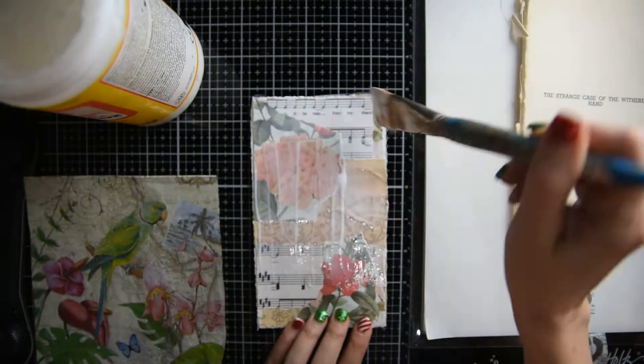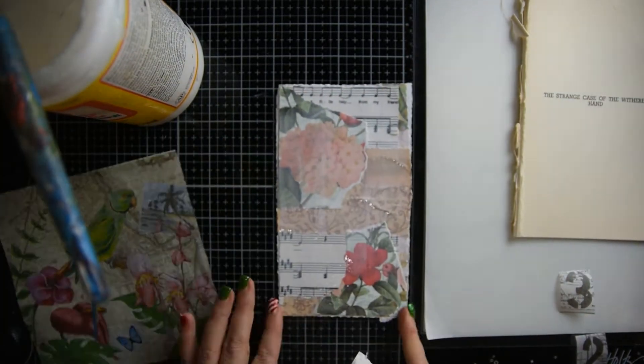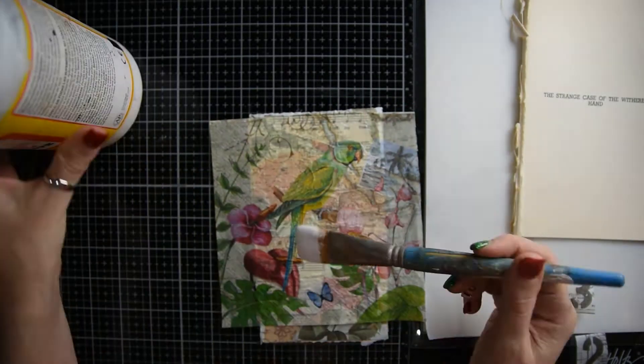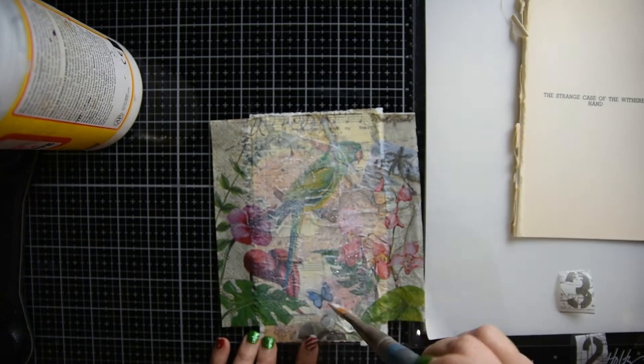And I'm putting Mod Podge all over my journaling card. And then I'm laying this napkin down. And then I'm putting another layer of Mod Podge on the top.